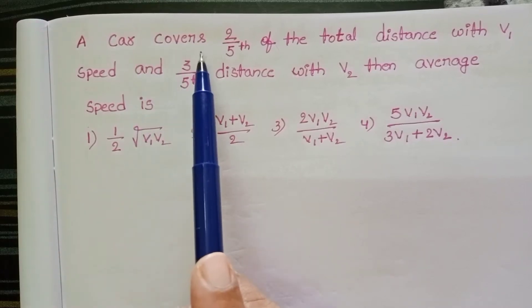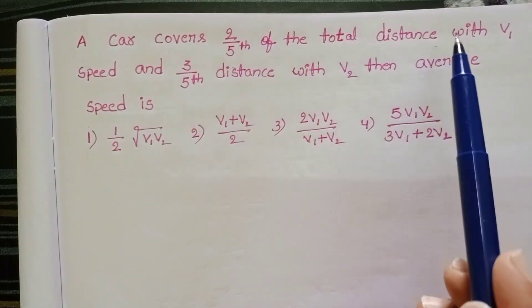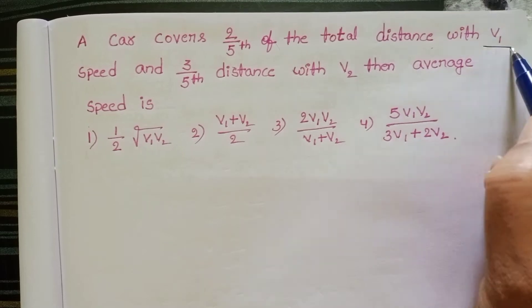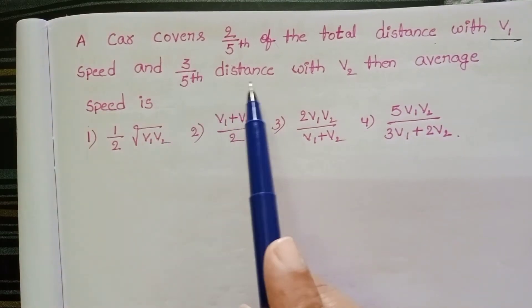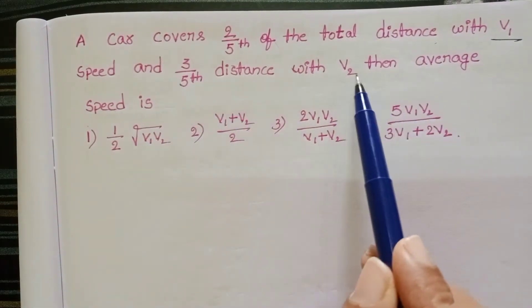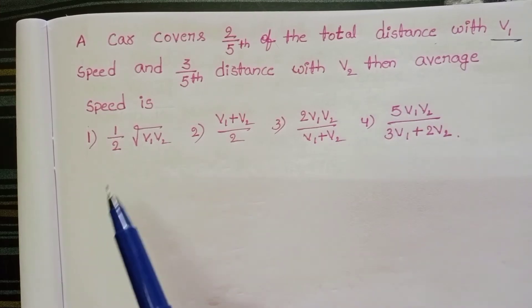A car covers two-fifth of the total distance with V1 speed and three-fifth distance with V2 speed, then average speed is.